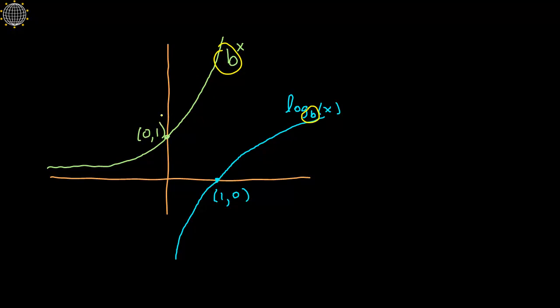One stationary point that always stays the same: anything to the 0 power is always 1, as well as log of any base of 1 is always 0. So (0,1) converts to (1,0) for the log function.